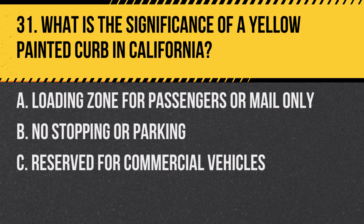Question 31: What is the significance of a yellow painted curb in California? A. Loading zone for passengers or mail only. B. No stopping or parking. C. Reserved for commercial vehicles. Answer: A. Loading zone for passengers or mail only. A yellow painted curb in California indicates a loading zone for passengers or mail only.